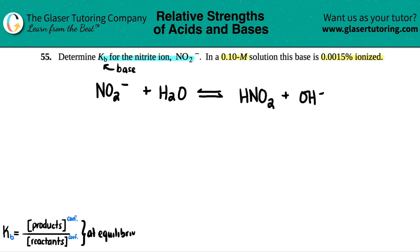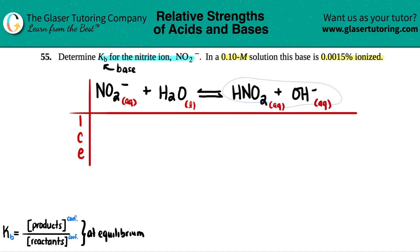Remember last chapter, we had to set up ICE tables. We're going to do the same here. All of your ions, all the ones that are charged, are always going to be aqueous, and your conjugate acids or conjugate bases like HNO2, that's going to be aqueous as well. The water however is just the solvent and that's a liquid. Now let's do our ICE.